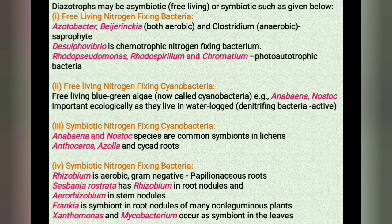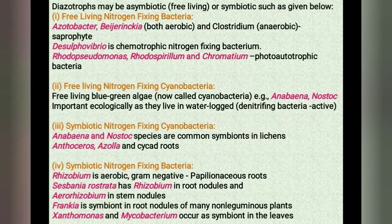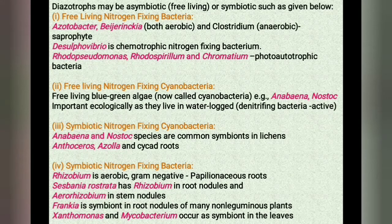Rhodopseudomonas, Rhodospirillum and Chromatium are nitrogen-fixing photo-autotrophic bacteria. The second category is the free-living nitrogen-fixing cyanobacteria. Many free-living blue-green algae, that is cyanobacteria, perform nitrogen fixation, for example Anabaena and Nostoc. They are important ecologically as they live in waterlogged soils where denitrifying bacteria can be active.